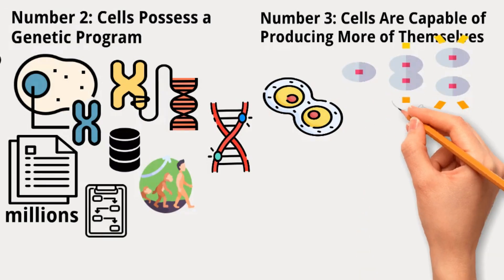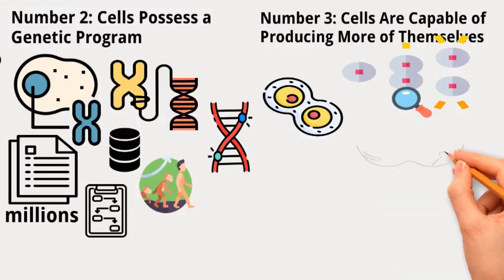Before division, the cell's genetic material is copied exactly, and each daughter cell gets a complete and equal set of this genetic information. Usually, the two daughter cells end up being roughly the same size.